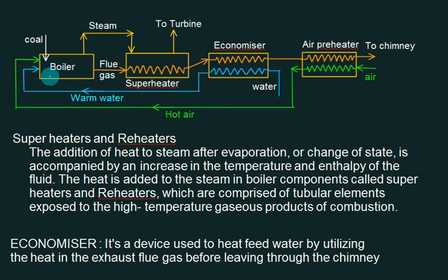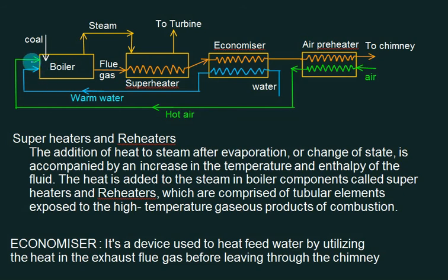The layout for the boiler plant is as follows. We have an air preheater, an economizer, a superheater, and a boiler. In the boiler, we are giving three inputs: one is water, one is air, and one is coal.